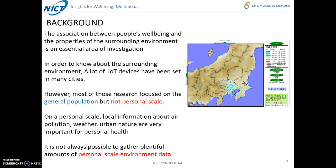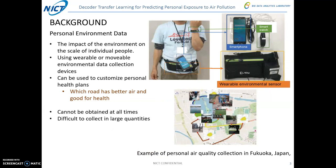On a personal scale, local information about air pollution, weather, and urban nature are very important for personal health. But it is not always possible to gather a sufficient amount of personal scale environment data. So, what is the personal environment data? This data captures the impact of the environment at a personal scale for individual people, collected using wearable or available environment data collection devices.